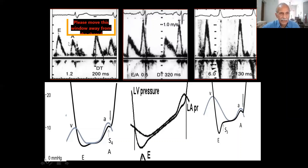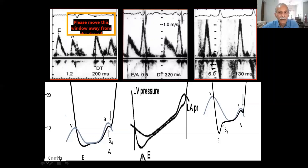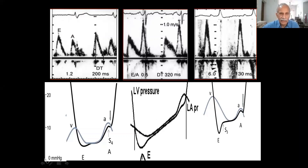For example, a deceleration time of about 180 to 200 ms with E/A ratio greater than 1.2 is essentially normal. Here, deceleration time is prolonged at 320 ms and E/A ratio is 0.5, so this is impaired relaxation. Here we can say the filling pressure has to be normal. As LV relaxation gets progressively worse, the LA pressure increases higher and higher — like borrowing more and more until there is nobody to pay off. The LA is enlarging to accommodate and maintain cardiac output.